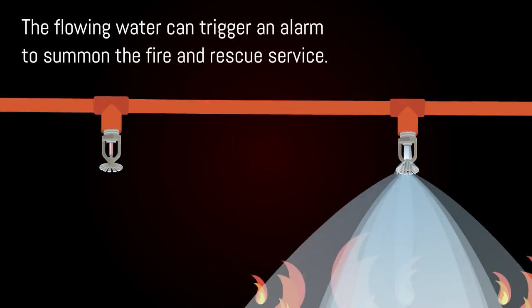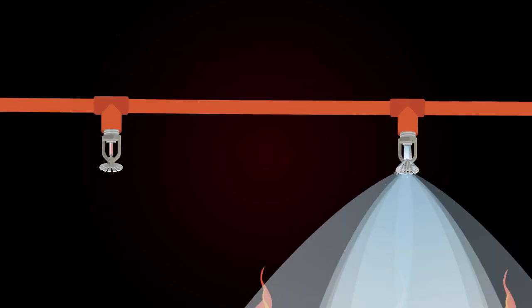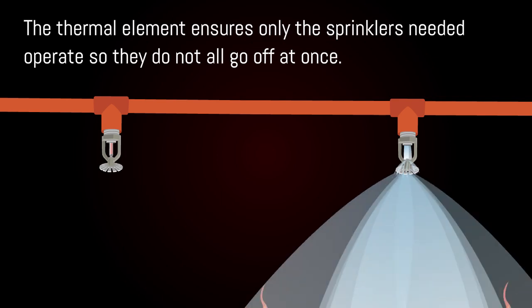The flowing water can trigger an alarm to summon the fire and rescue service. The thermal element ensures that only the sprinkler reaching a certain temperature operates to release water, so they do not all go off at once.